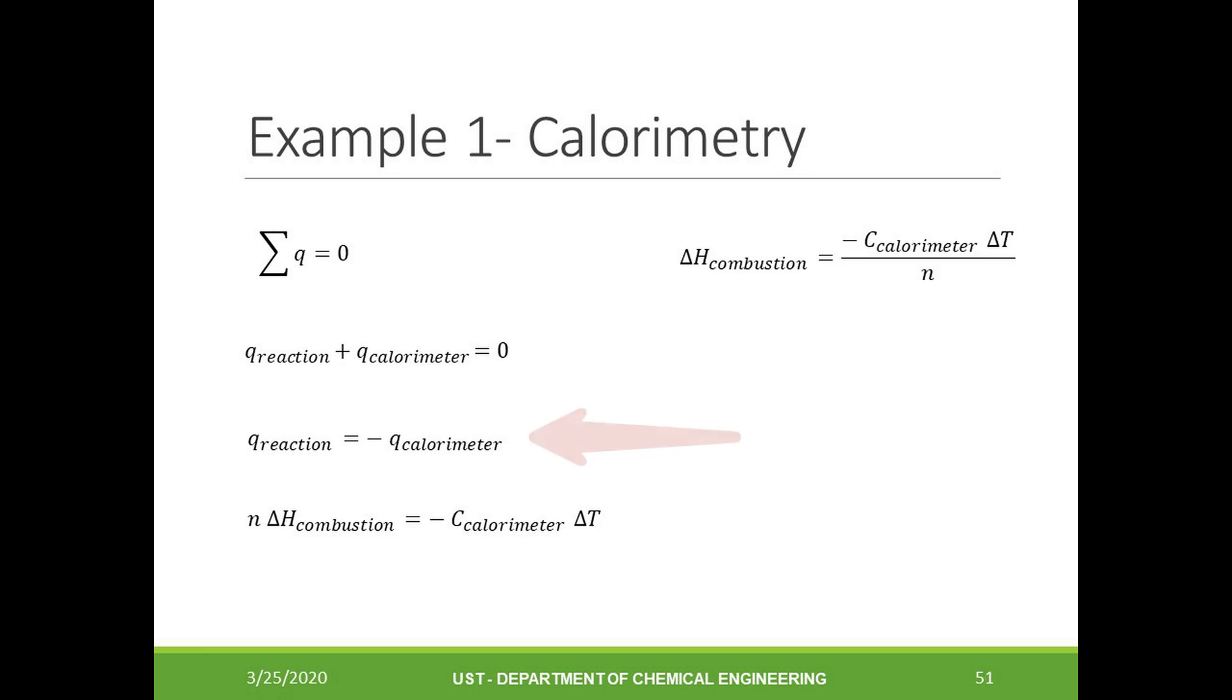We can expand this equation into n times the enthalpy of combustion is equal to the negative heat capacity of the calorimeter multiplied by the change in temperature. Now this equation can be rearranged into the change in enthalpy is equal to the negative of the heat capacity multiplied by the change in temperature divided by the number of moles.